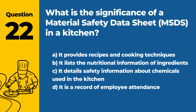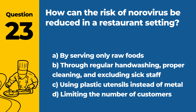Question 22: What is the significance of a Material Safety Data Sheet (MSDS) in a kitchen? a. It provides recipes and cooking techniques. b. It lists the nutritional information of ingredients. c. It details safety information about chemicals used in the kitchen. d. It is a record of employee attendance. Answer: c. An MSDS provides important safety information about chemicals, including potential hazards, handling instructions, and emergency procedures, which is crucial for maintaining a safe kitchen environment.